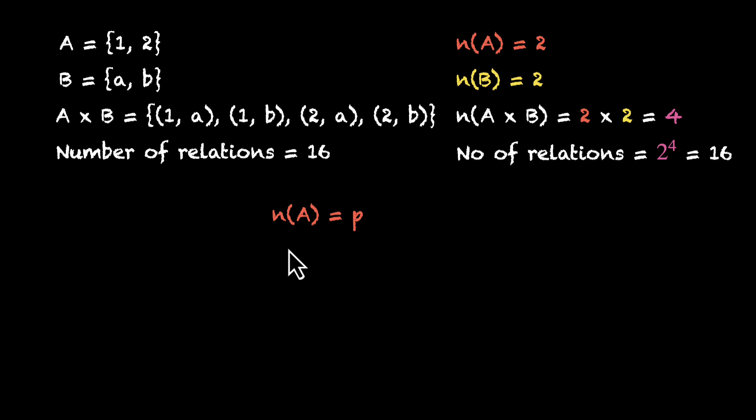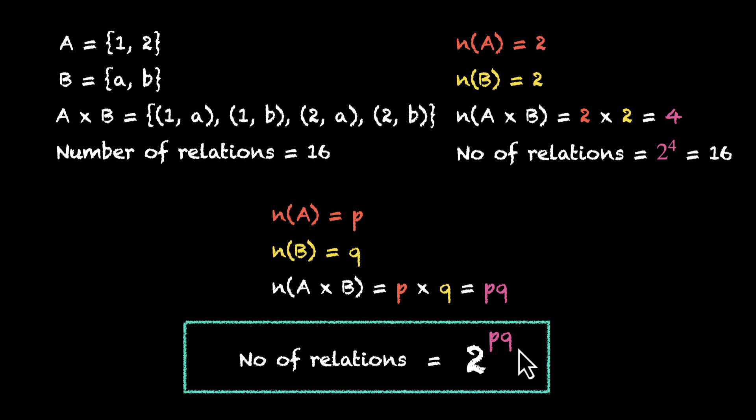So let's generalize. If number of elements of A is P and number of elements of B is Q, the number of elements of A times B is going to be P times Q, that's PQ. And the number of possible relations, the total number of possible relations, that will be 2 to the power PQ. That's going to be our formula.